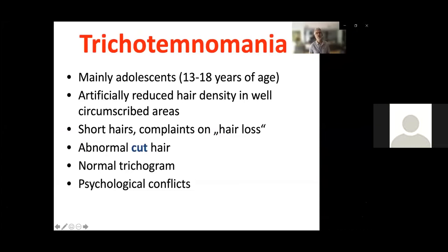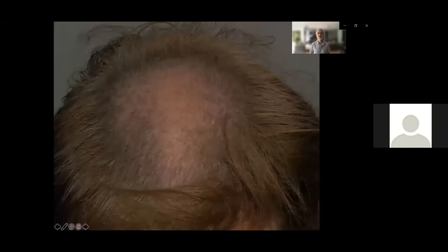What is trichotemnomania? In trichotillomania people are pulling their hair, but in trichotemnomania they cut their hair artificially and come to you complaining of hair loss. Usually they are not young children — mostly adolescents from 13 to 18 — and they have artificially reduced hair density in well-defined areas with short hairs. They come to you saying 'I'm losing my hair,' and you see these unusual plaques of short hair on the scalp. You might find abnormal cut hair with a totally normal trichogram because they do not pull the hair, and they also have psychological conflicts.